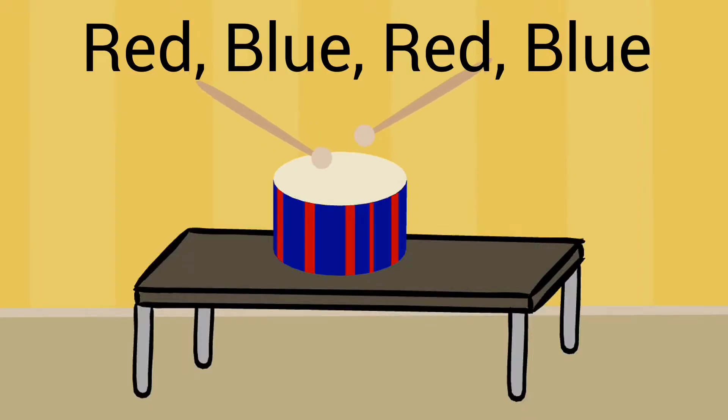Check out the vertical stripes on the drum. The colors are red, blue, red, blue. That's an example of an AB repeated pattern. There's also an AB pattern on my clothes. This is a referee shirt. We have different vertical stripes — vertical means that they go up and down. They are black, white, black, white. That creates an AB pattern that is exactly like the pattern we found on the drums. It just uses different colors.